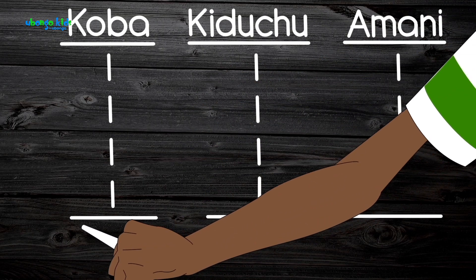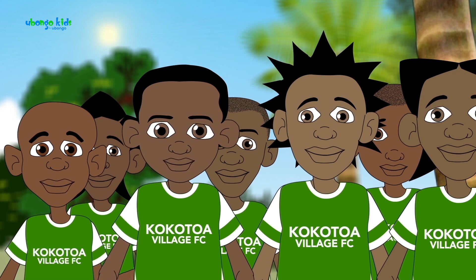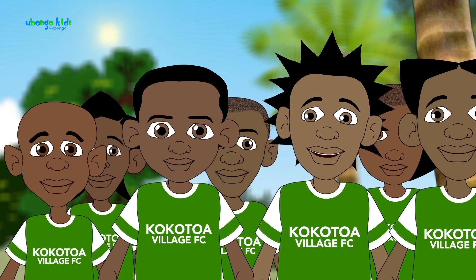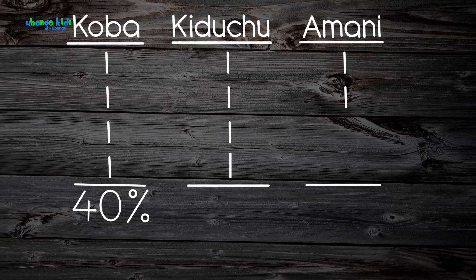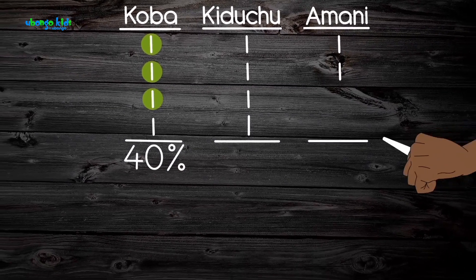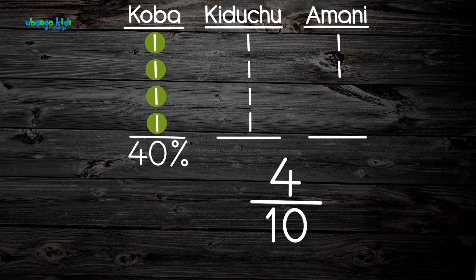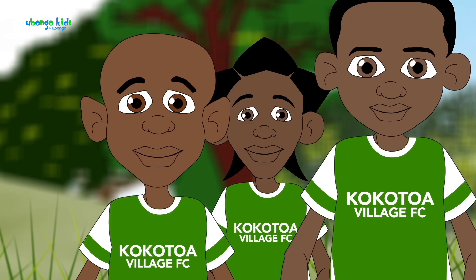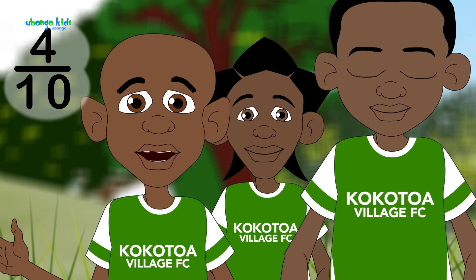Koba got 40%. Wait! How can he get 40 when there aren't even 20 of us? Kibena, you're doing it all wrong. Where did the 40 come from? There are only 10 of us. Listen, Baraka. Results of elections are often reported using percentages. For what? Look, Baraka — four of us chose Koba. That means four out of ten chose Koba, right? Four out of ten. Yeah, that's right. But where did the 40 come from?